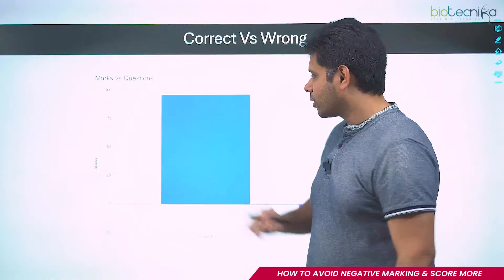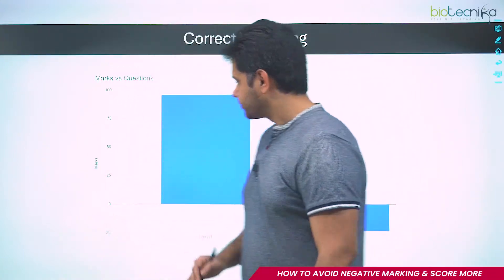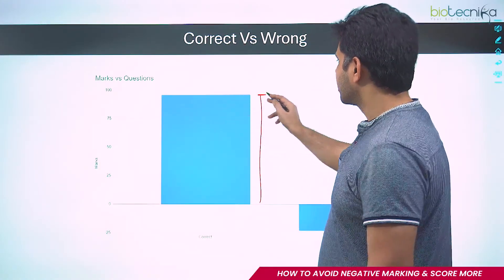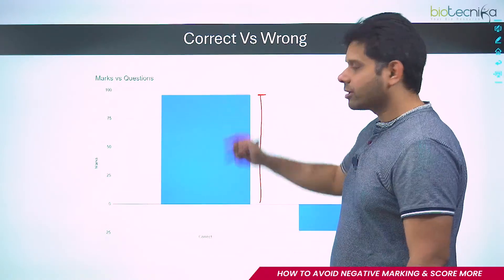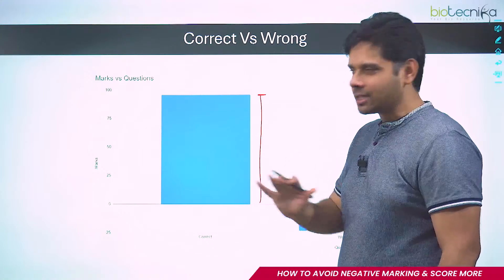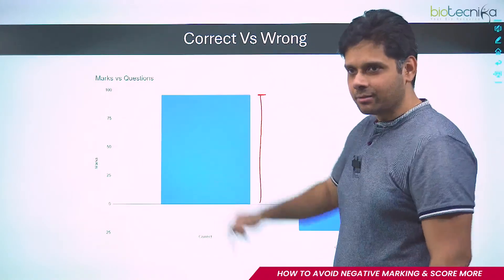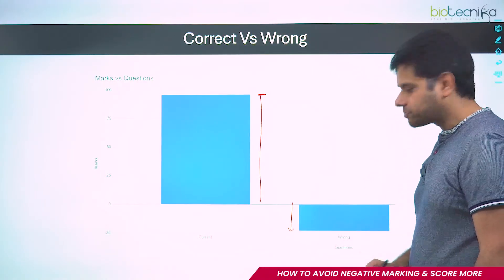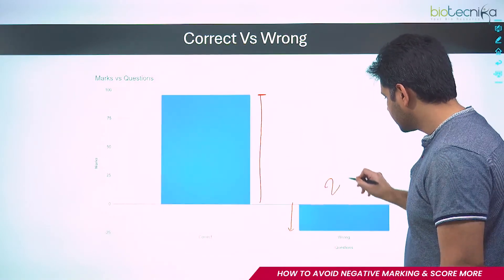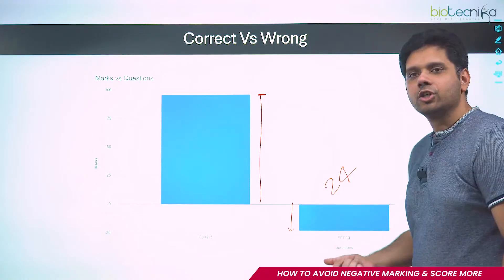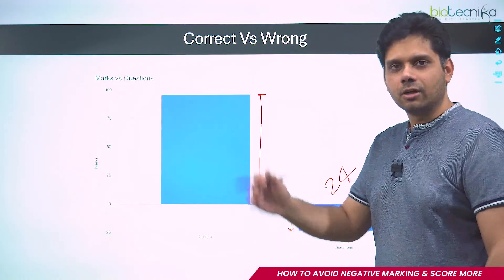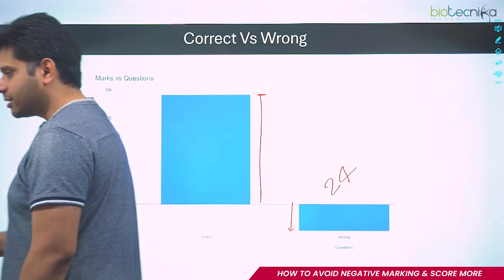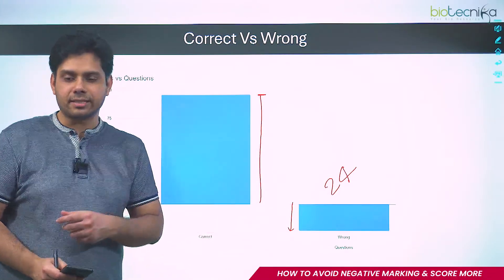Now let's look at the marks received. She scored around 95 correct marks. But look at what is bringing her down — she lost around 23 to 24 marks. Whatever she gained was offset. Where things go wrong is we think that if we attempt more Part A and B and go wrong, our negative marks will be less. But your battle is not between parts — your battle is part versus time.